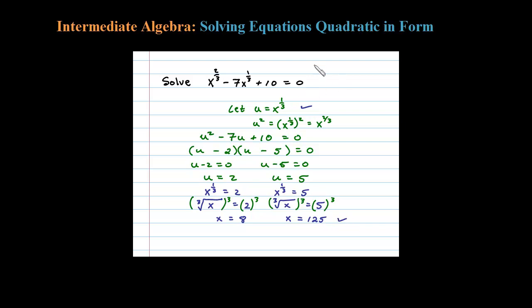The original has two solutions: 8 and 125 in set notation.